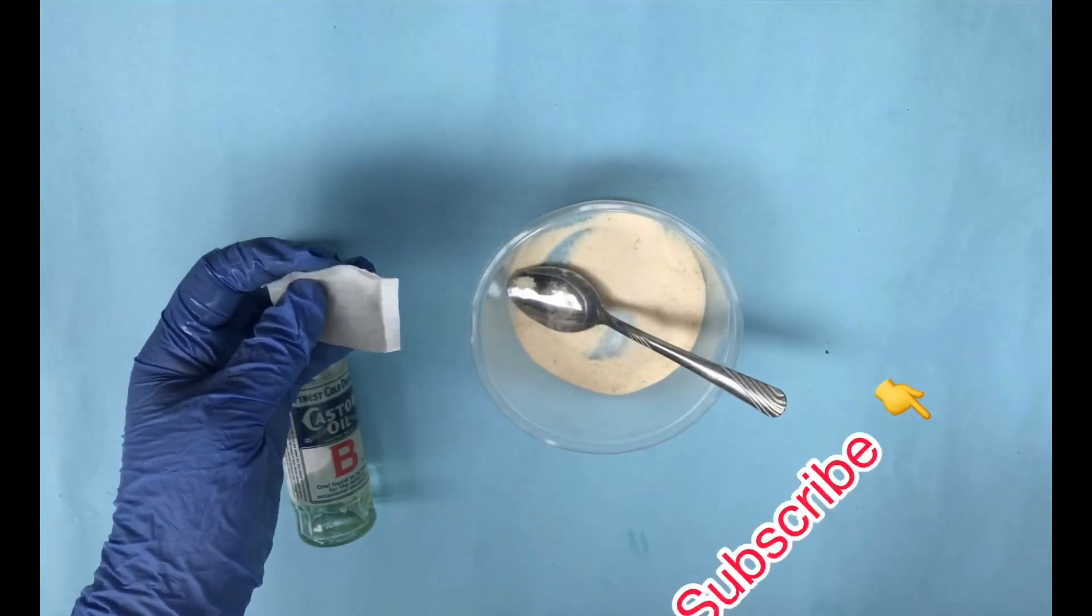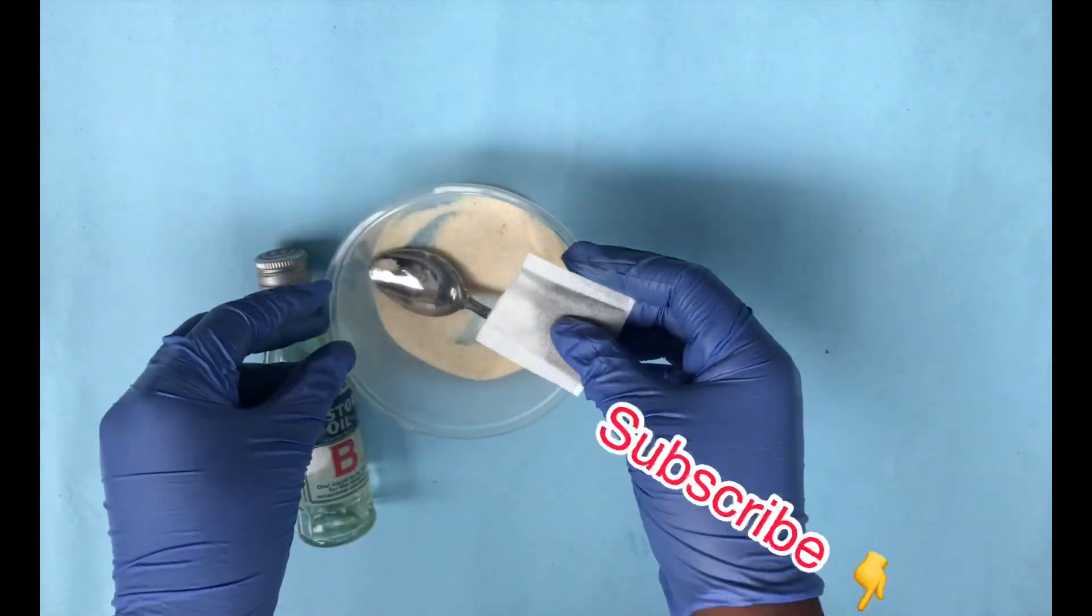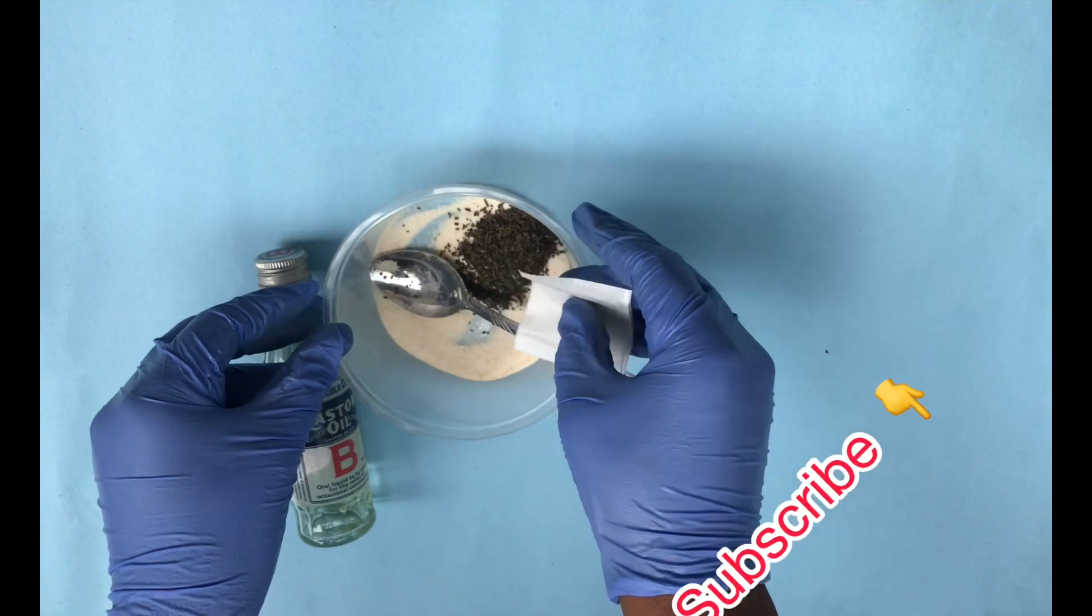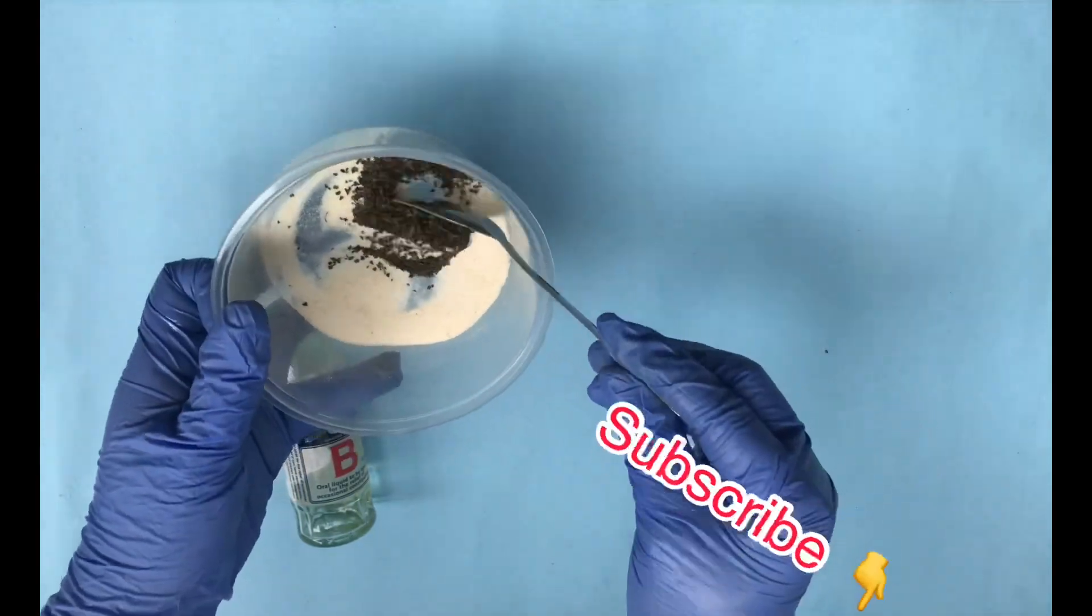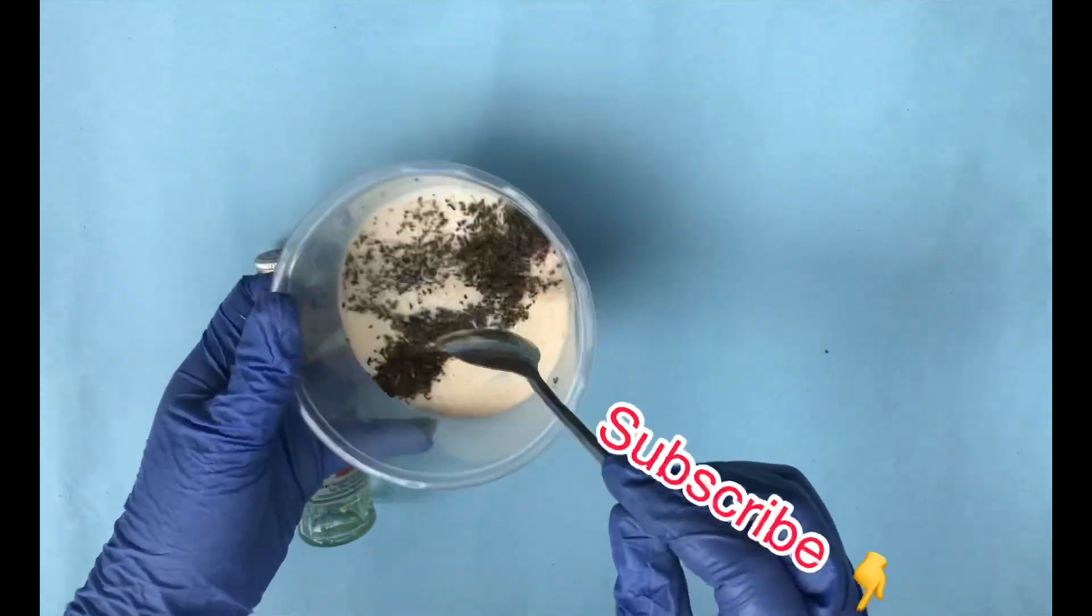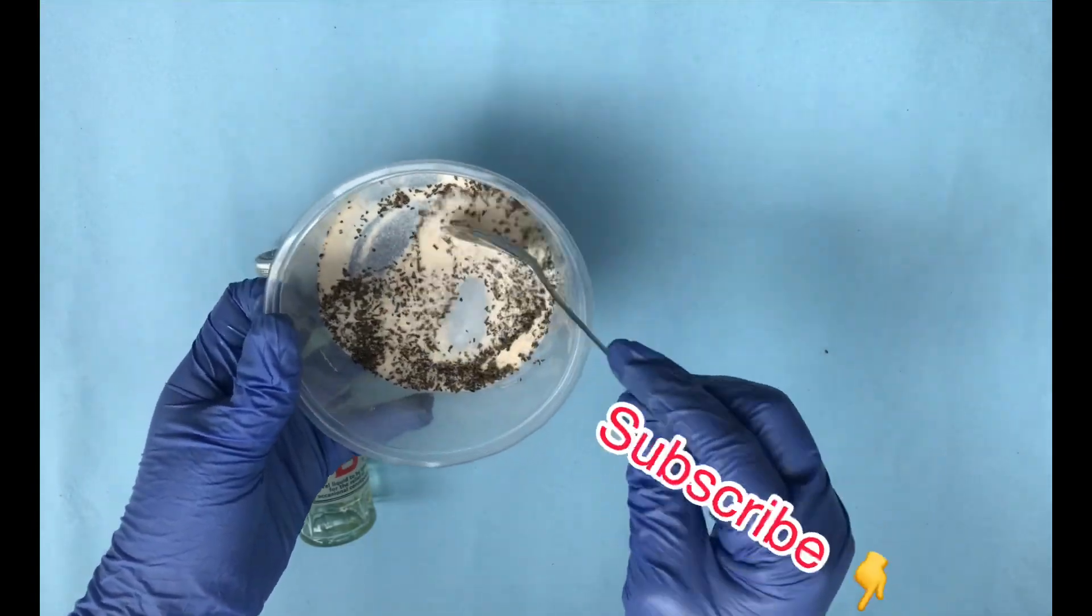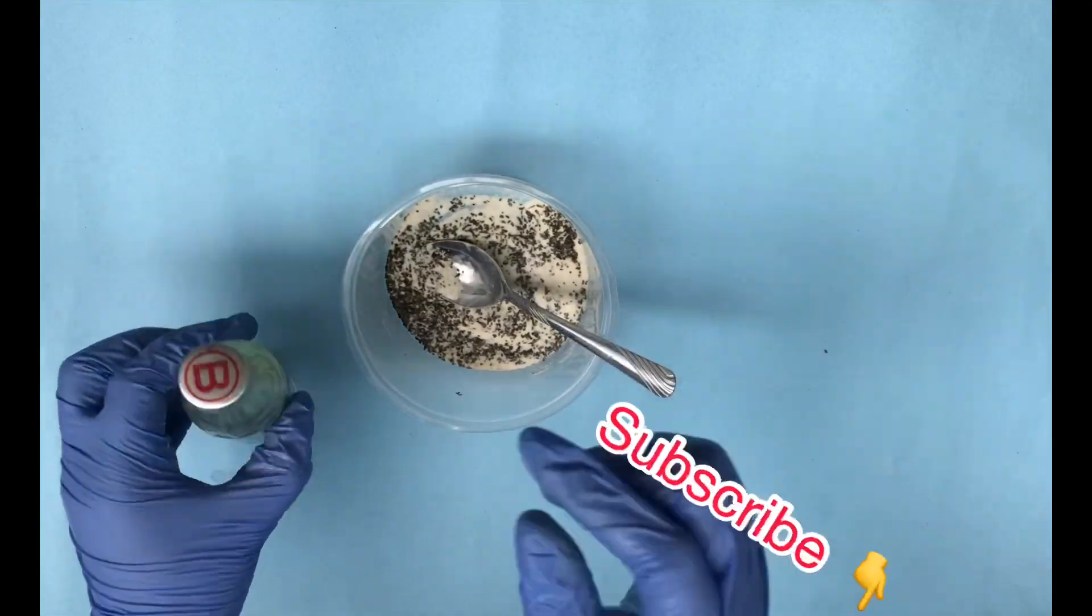Right now I'm pouring in my green tea into my small bowl where I already have my rice flour. Who knew rice flour and green tea could help get rid of cellulite and varicose veins? Well, now you know, so please watch this video till the end.